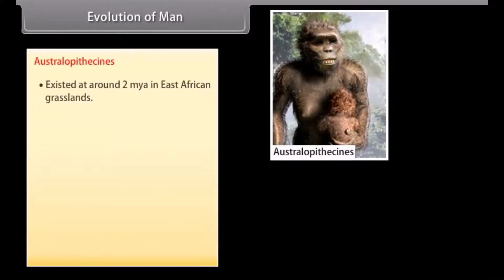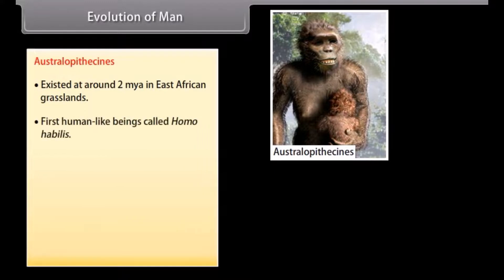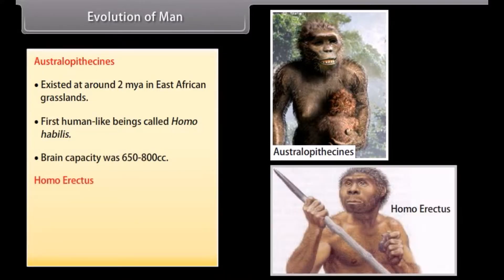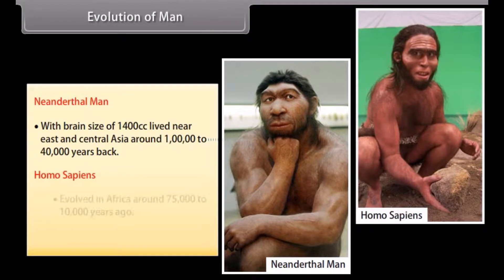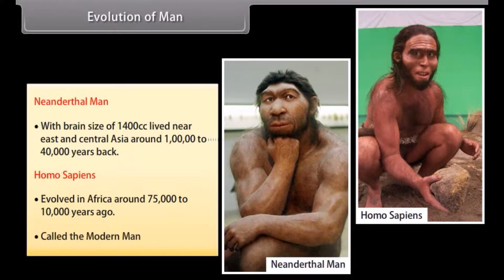Australopithecines existed around 2 million years ago in East African grasslands and were the first human-like beings, also called Homo habilis, with a brain capacity of 650–800 cc. Homo erectus existed around 1.5 million years ago with a larger brain of 900 cc and ate meat. Neanderthal man had a brain size of 1,400 cc and lived in East and Central Asia around 1 lakh to 40,000 years ago. Homo sapiens evolved in Africa around 75,000 to 10,000 years ago and are called modern man.